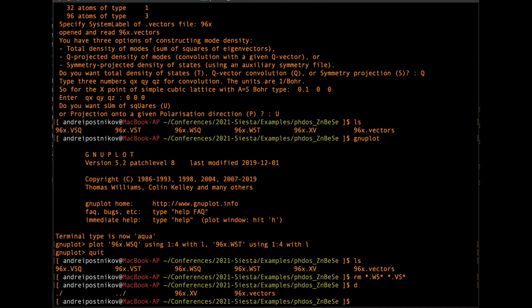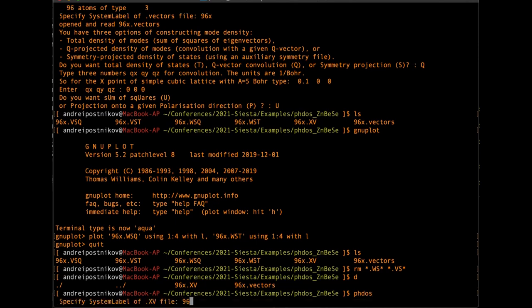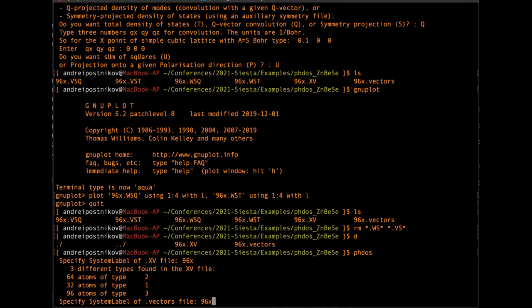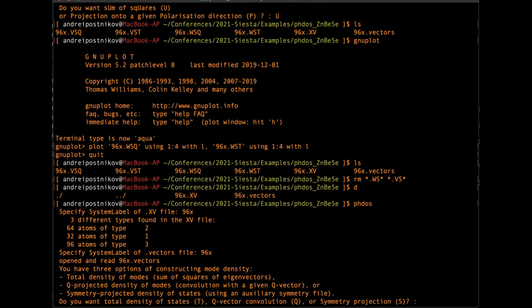For this example, we consider a mixed semiconductor with a supercell of 192 atoms with the composition of zinc-beryllium-selenium. In this directory, we find already the structure file which describes which atom is situated where and the vectors file which results from the Vibra calculation. We simply run PHDOS and we pass the information about the file name for xv file and file name for the vectors file. Then we have a choice. We may want to calculate the total densities of states. And this is what we do. We press T.